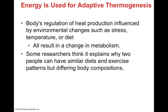We use energy constantly for what's called adaptive thermogenesis, which is your body's regulation of heat production. It is influenced by multiple environmental changes including your stress level, your temperature, and your diet — any of these can result in a change in your metabolism, which is the combination of your anabolic and catabolic pathways. This is an example of why two individuals can have very similar diet and exercise patterns but have completely different body compositions, because they might have different adaptive thermogenic capabilities.